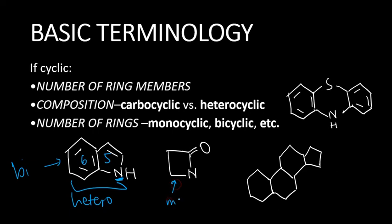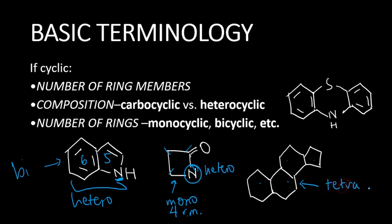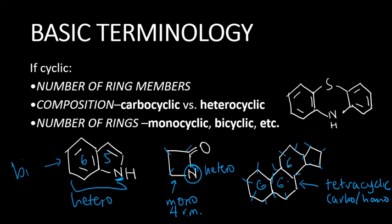Additional examples: this one is bicyclic, six-membered and five-membered, and since there's a different atom, everything is heterocyclic. How about this? Only one ring, so it's monocyclic. How many members? It looks like a square, so that's a four-membered ring — four ring members — and since there's a different atom, that is heterocyclic. How about this? How many rings? One, two, three, four — so we can use the prefix tetra, meaning four. That's tetracyclic. All the atoms are carbon, so that's carbocyclic or homocyclic. The ring members: hexagon — six, then another, then another. This one is a pentagon — so five, six, six, six, five.